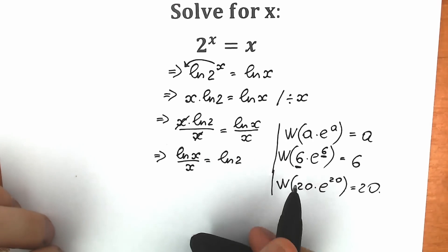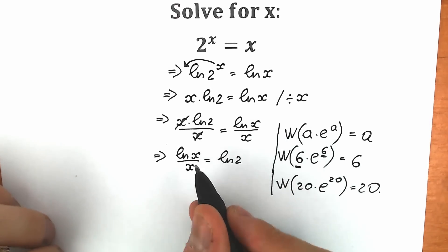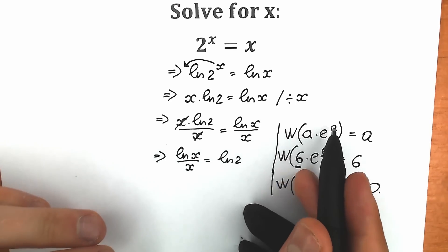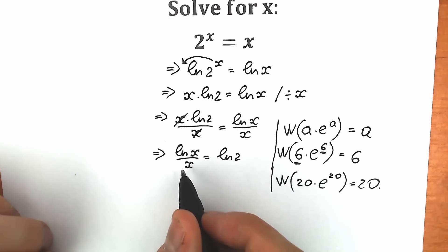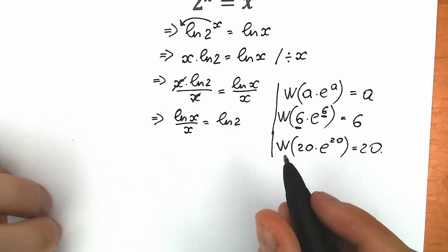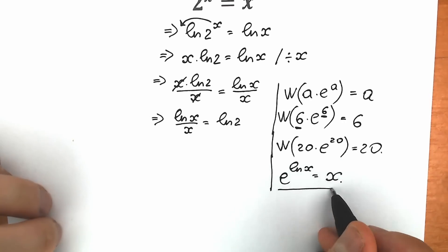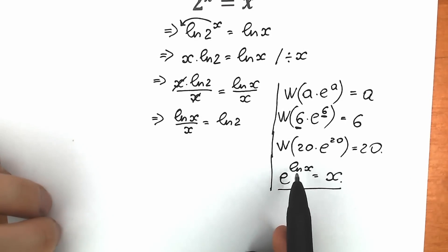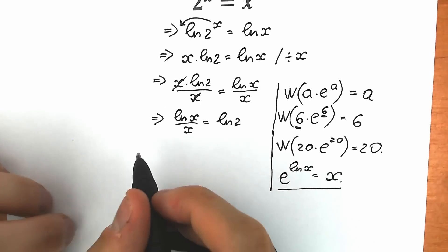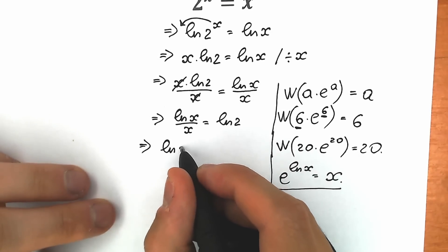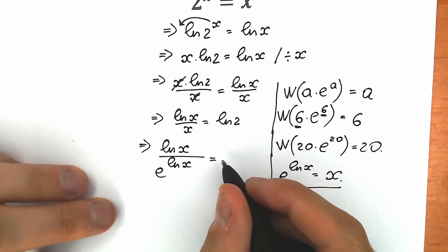On the left side right now, let's try to create this type of expression. We need to create the structure a times e to the power a. We have natural log x over x, but we don't have e, and we don't have the same expression a in both places. So let's think about how to create this. First of all, instead of x in the denominator, let's write e to the power natural log x, since e^(ln x) equals x. Let's plug that in: natural log x divided by e^(natural log x), equal to natural log 2.